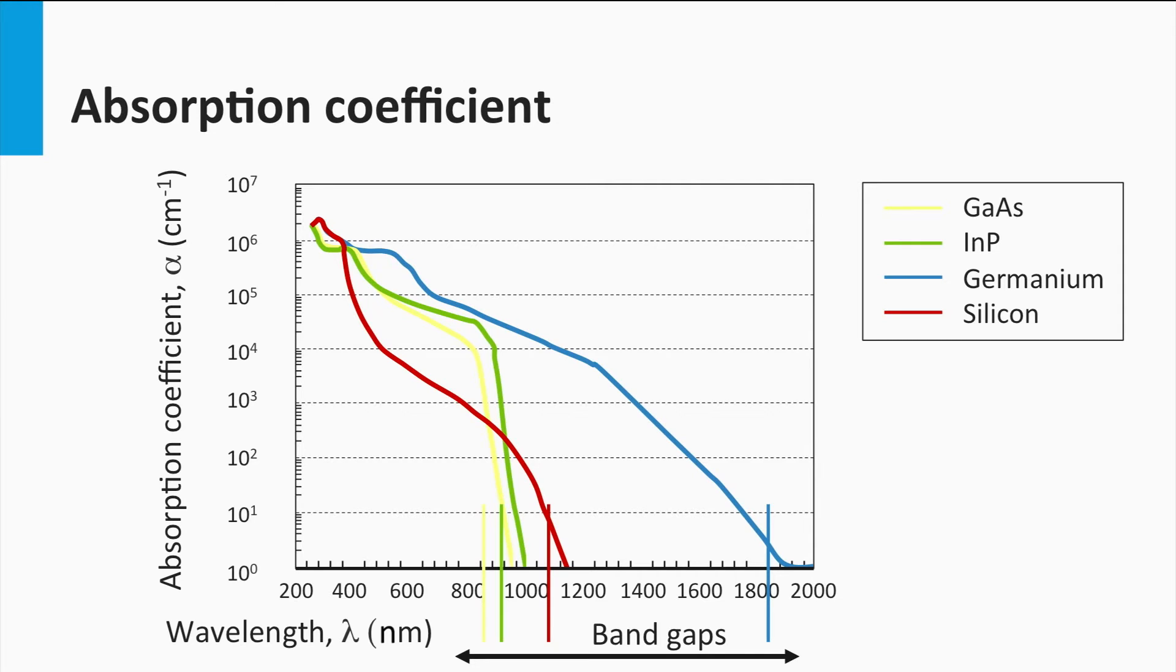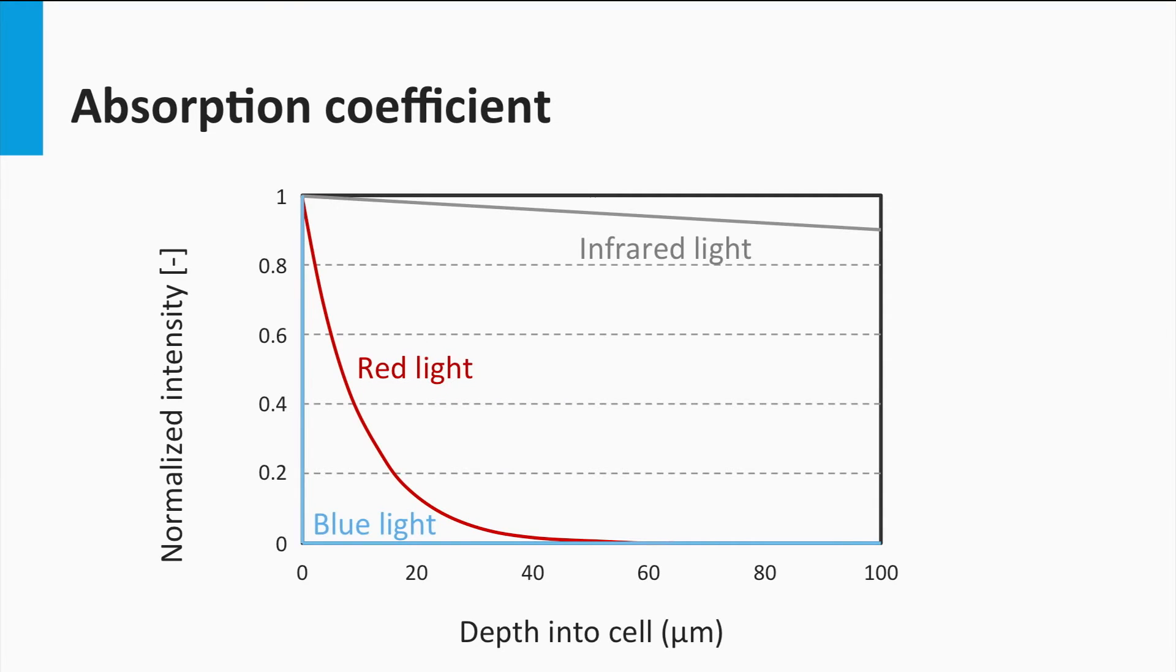In general, all semiconductor materials show that the absorption coefficient in the blue is orders of magnitude larger than in the red. This means that the penetration depth of blue light into the absorber layer is rather small. Let's take as an example the normalized light intensity with position in the silicon bulk. As you can see in this graph, the blue light is already fully absorbed within a few nanometers. The red light requires an absorption path length of 60 microns to be fully absorbed. The infrared light is hardly absorbed and after an optical path length of 100 microns, only 10% of the light intensity is absorbed.